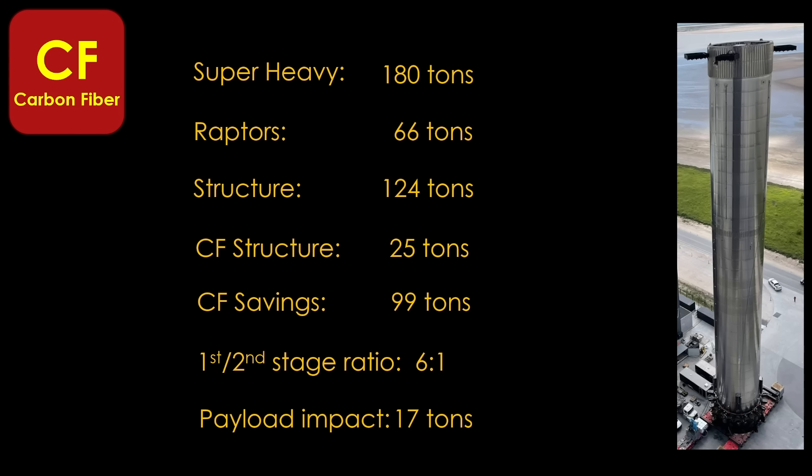That is huge, but we have to remember that it takes roughly six kilograms of weight reduction on the first stage to get an extra kilogram of payload to orbit. So we divide that by six and we get an expected payload impact of 17 tons. That's a whole lot of investment to build a brand new factory to end up with only 17 tons of extra payload. So I'm going to say, yes, you could do this, but I think there's pretty much zero chance SpaceX will do it. It's just not worth the effort.